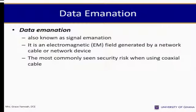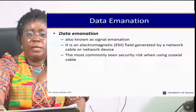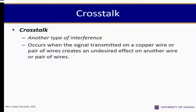Data emanation, also known as signal emanation, is an electromagnetic field generated by a network cable or network device. The most commonly seen security risk when using coaxial cable is data emanation. Crosstalk is another type of interference that occurs when a signal transmitted on a copper wire or pair of wires creates an undesired effect on another wire or pair of wires.